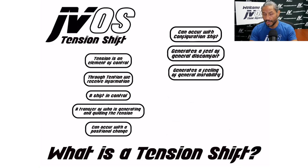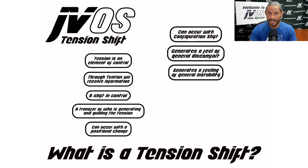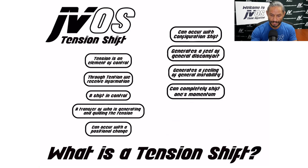For example, you're in side mount and the person digs an underhook. All of a sudden, you were stable — what I call fundamental stability — and then all of a sudden, you feel unstable. Tension shifts can completely shift an opponent's momentum.